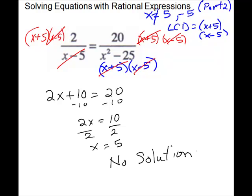You can compare the two methods here — to me, this second approach involves less work. With a complicated denominator, I would tend to multiply both sides by the LCD rather than doing a proportion, but you can choose either method.